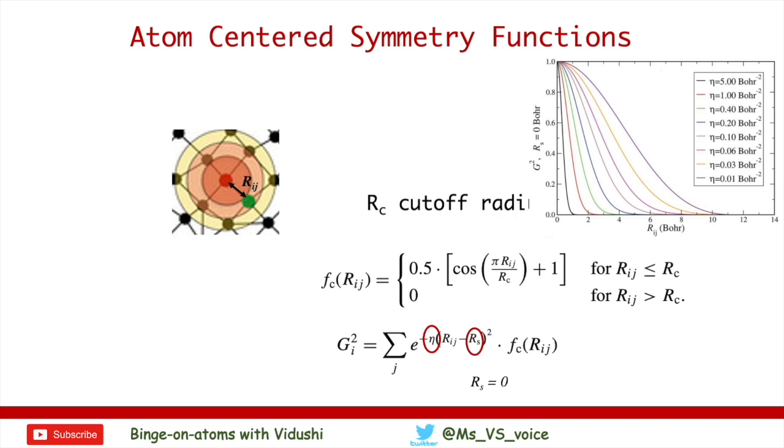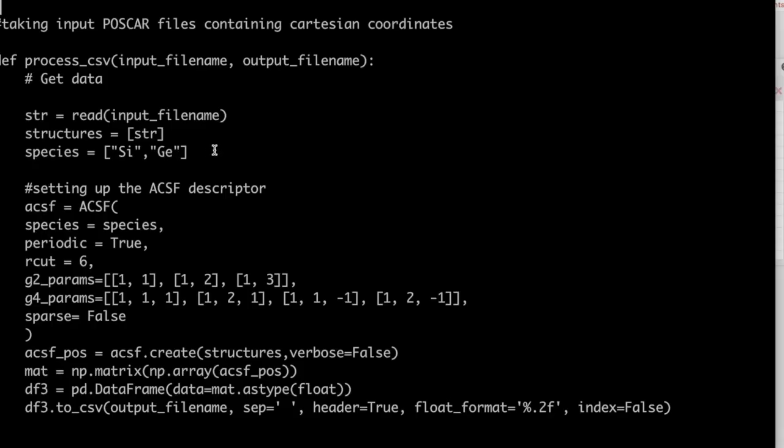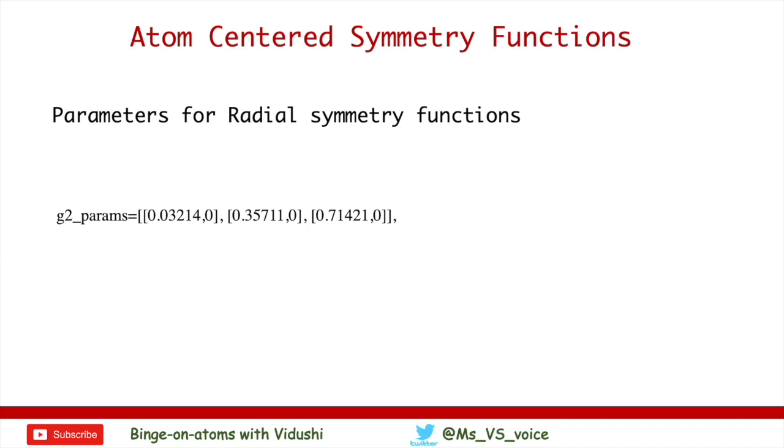Now let me show you where values of eta and RS are defined in the code which I showed you earlier. These G2 parameters that you see here, this is where you define eta and RS. Of course, values written here are random. Don't follow these values. Now let us assume these are your G2 parameters. Here, the first value is eta, defining width of the Gaussian. And the second value is RS, defining center of Gaussian. Now you must be wondering, what are the other sets?